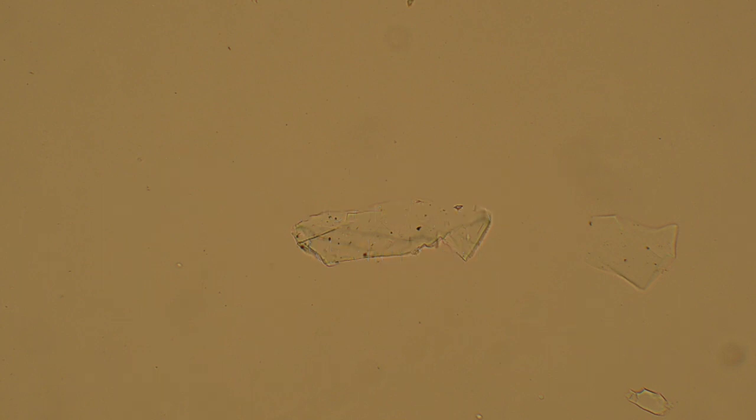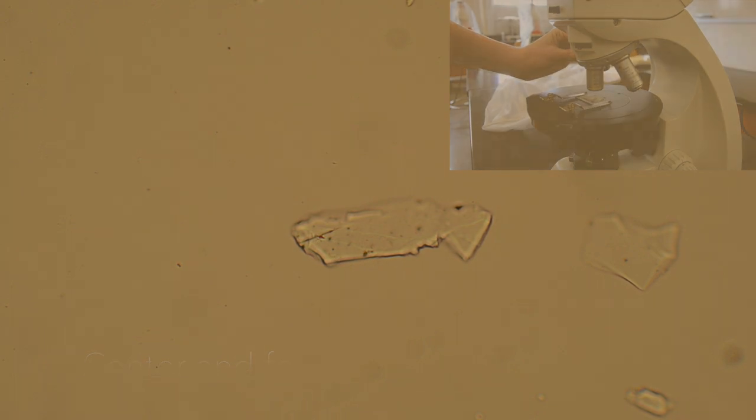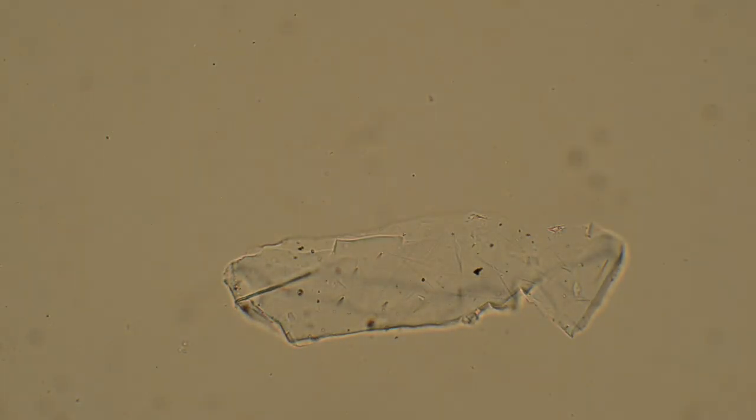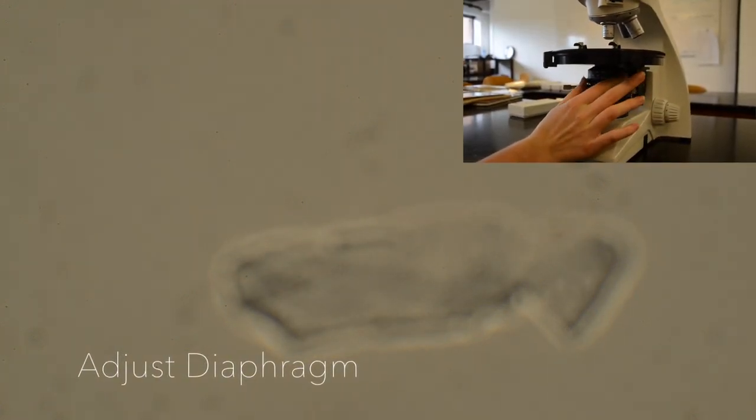Here, we are looking at a grain mounted in epoxy in plain polarized light. In order to determine relief, center and focus the grain, switch to a higher objective for a larger image, and adjust the diaphragm under the microscope, which will aid in contrast visibility.